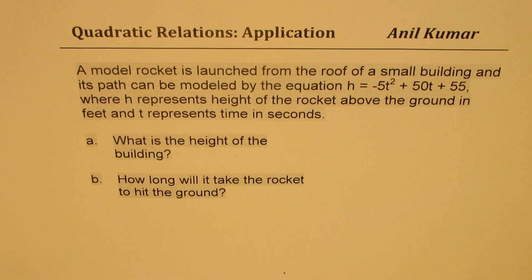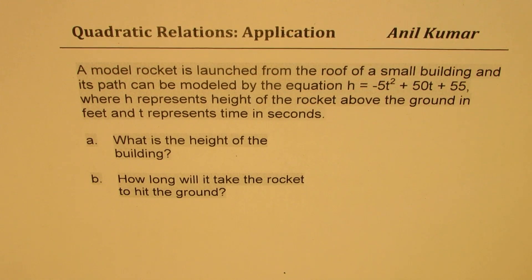equation H equals minus 5T squared plus 50T plus 55, where H represents height of the rocket above the ground in feet and T represents time in seconds. What is the height of the building? How long will it take the rocket to hit the ground?